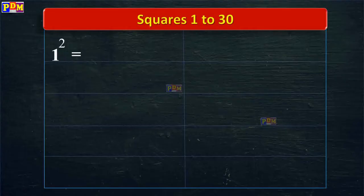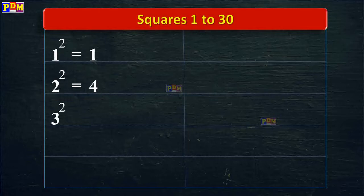1 square is equal to 1. 2 square is equal to 4. 3 square is equal to 9. 4 square is equal to 16.